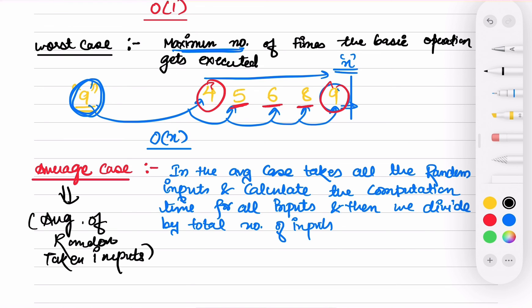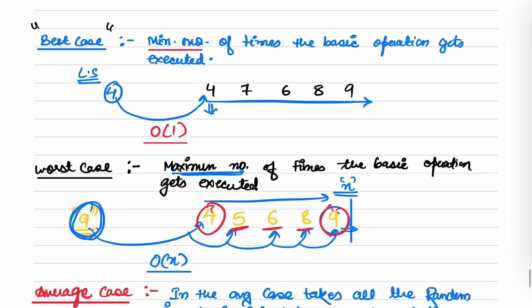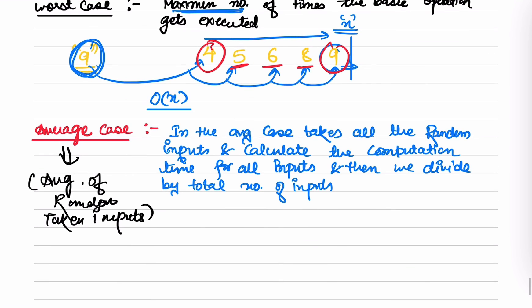So you understand how we represent time complexity: best case means finding the minimum condition that gives results, worst case is the maximum number of executions of the basic operation, and average case means taking the average of the particular inputs. In our next video we'll start with examples of how to calculate time complexity. If you like this video, please like, share, and subscribe. Thank you.